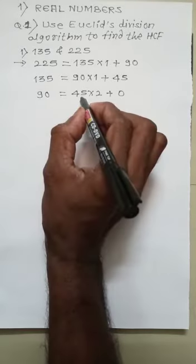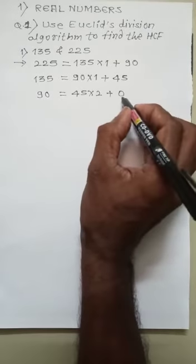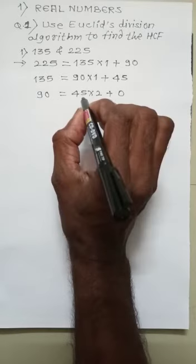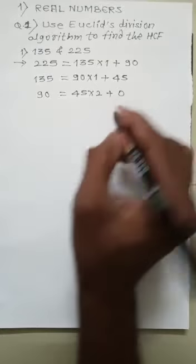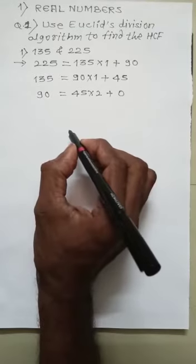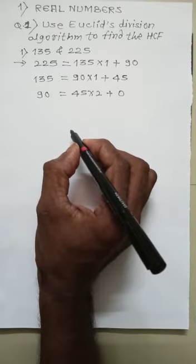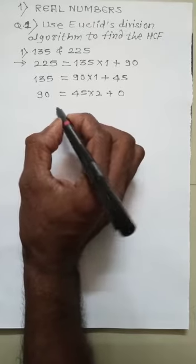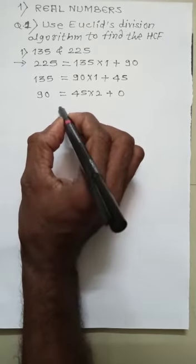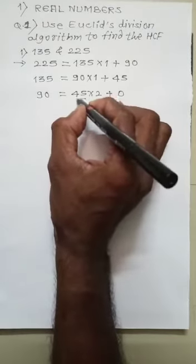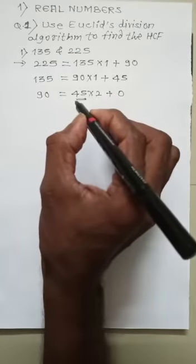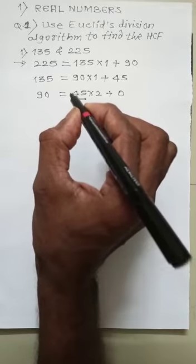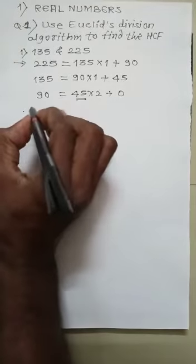Since 90 is completely divisible by 45, with dividend equal to divisor times quotient plus remainder where remainder is 0, the divisor at this stage is 45, which is the HCF of 225 and 135.